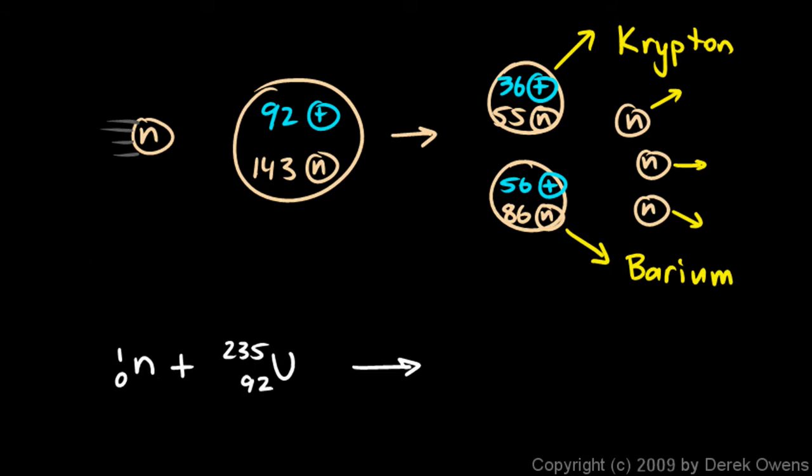Let me move this writing down here a little bit lower. We end up with krypton, and that's krypton with a mass number of 91 and an atomic number of 36, plus the barium, and that's barium with a mass number of 142 and an atomic number of 56, plus three neutrons. We'll write that like this: neutrons with a mass number of 1 and an atomic number of 0.